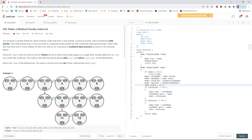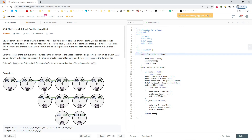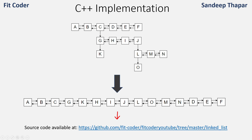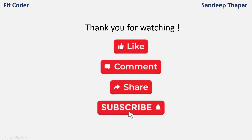This problem is available on LeetCode as question number 430: Flatten a Multi-Level Doubly Linked List. The same code passes successfully. In this video we saw how to solve this problem recursively. For the iterative method using a stack, refer to the video in the top right corner. If you have any doubts or suggestions please leave them in the comments. Like, share, and subscribe — this is Sandeep Tapper signing off.